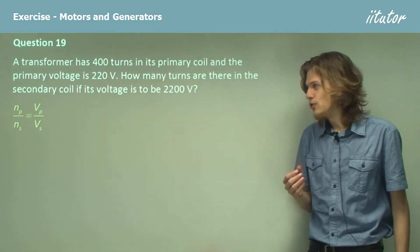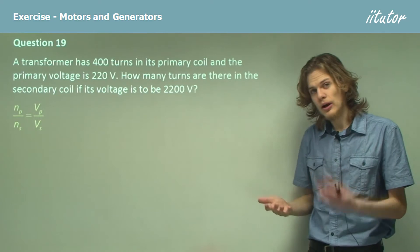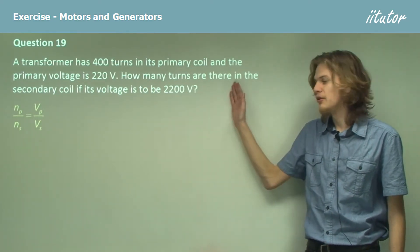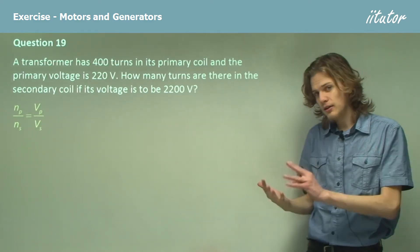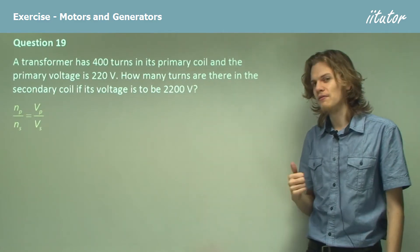So now all we need to do is rearrange the equation so that we can make the secondary coil's number of turns the subject and then substitute everything in.